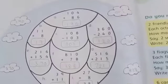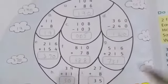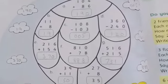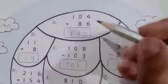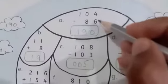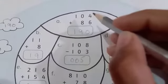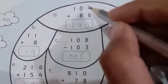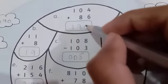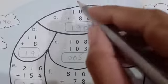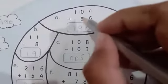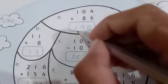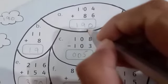Let's start our work. First solve all the questions given inside this balloon. There's addition and subtraction. Question number one: 104 + 86. Six and four make ten, write zero here and carry one. Eight and one make nine, and one comes down. The answer is 190.